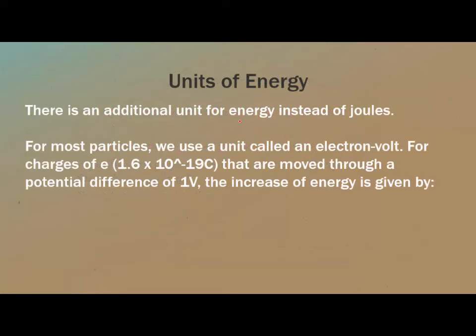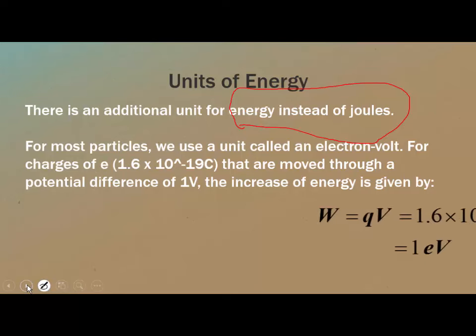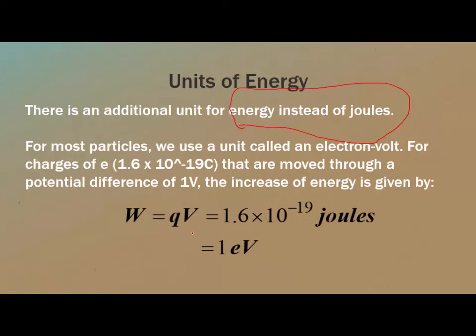We've been using joules for energy, but there is another unit you'll see from time to time called the electron volt. The electron volt equals 1.6 times 10 to the negative 19 joules. That's an extra conversion you may need for some problems.